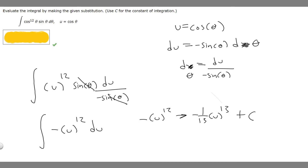So now all we got to do is replace u with what they told us, cosine of theta. So minus 1 over 13 times u which is cosine of theta, and then we're raising that to the 13, plus C. So this right here is going to be your final answer.